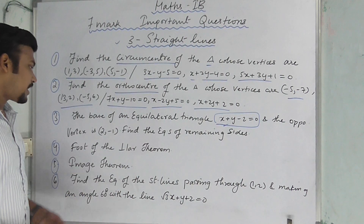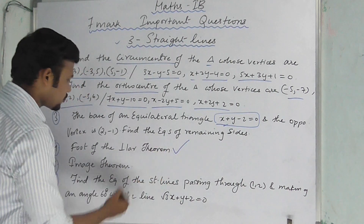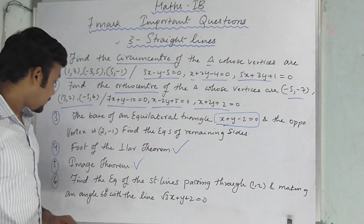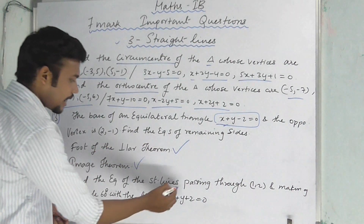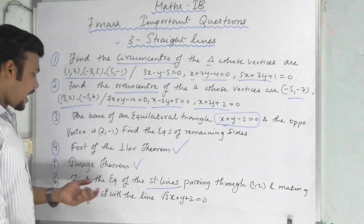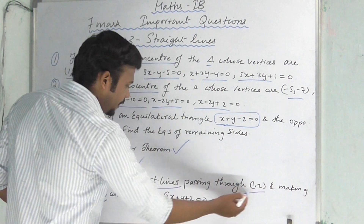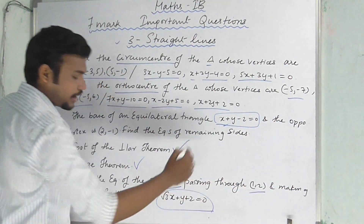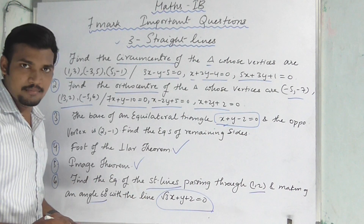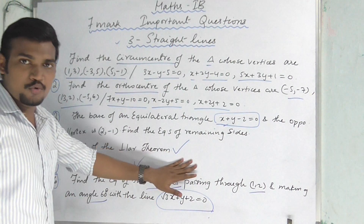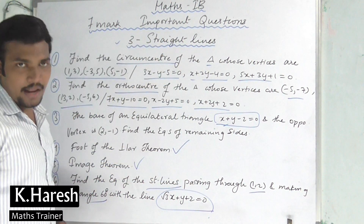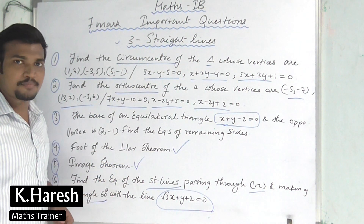If you want to choose the foot-of-the-perpendicular theorem, I am going to choose the image theorem. Find the equation of the straight lines passing through a point and making an angle with a given line — choosing the angle, point, and line. These are the important questions, and there are seven more important questions from the chapter straight lines. Now I will move to the next important chapter.